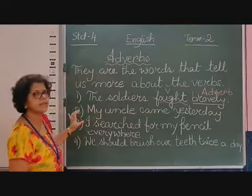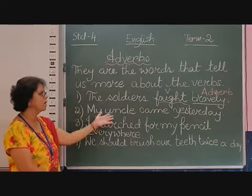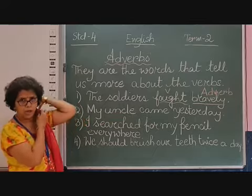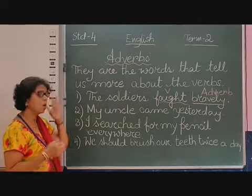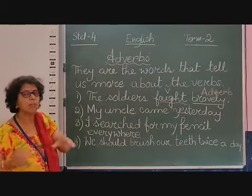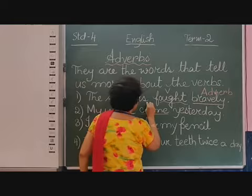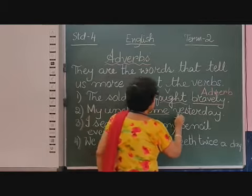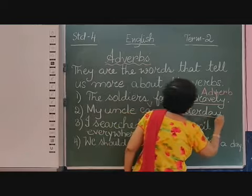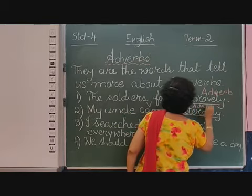Next, see the second sentence: My uncle came yesterday. 'Came' is a verb — an action. Now, when did he come? He came yesterday. 'Yesterday' is telling more about 'came' — when he came. So if 'came' is the verb, then the word that tells you more about the verb is an adverb. Yesterday is an adverb.